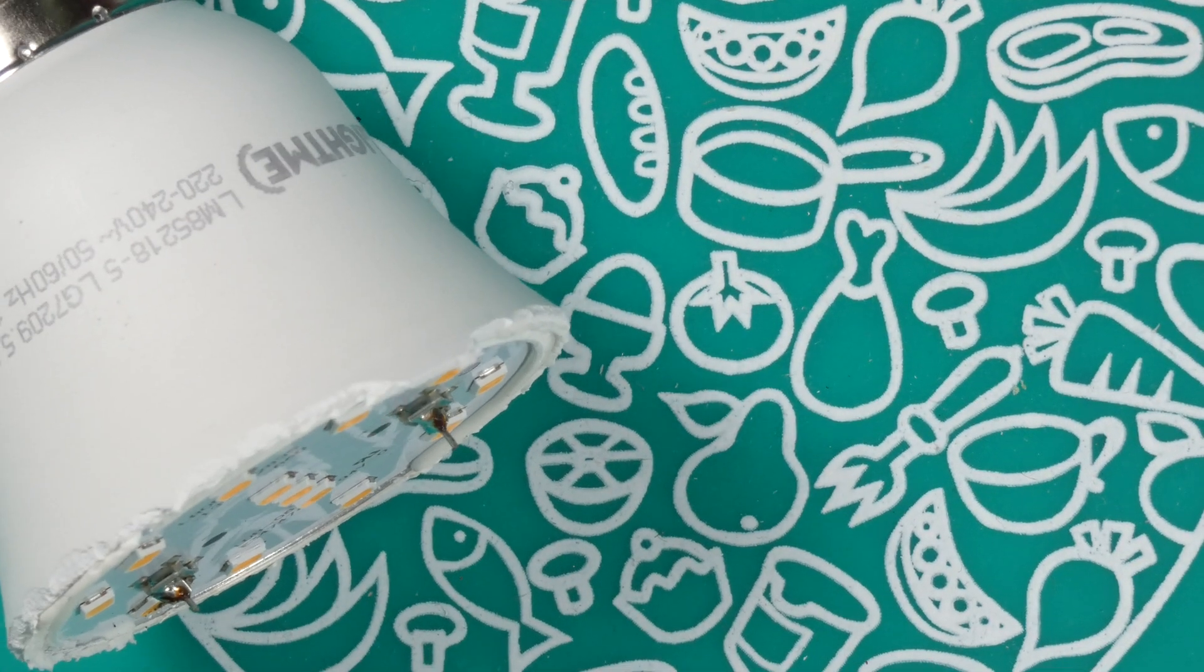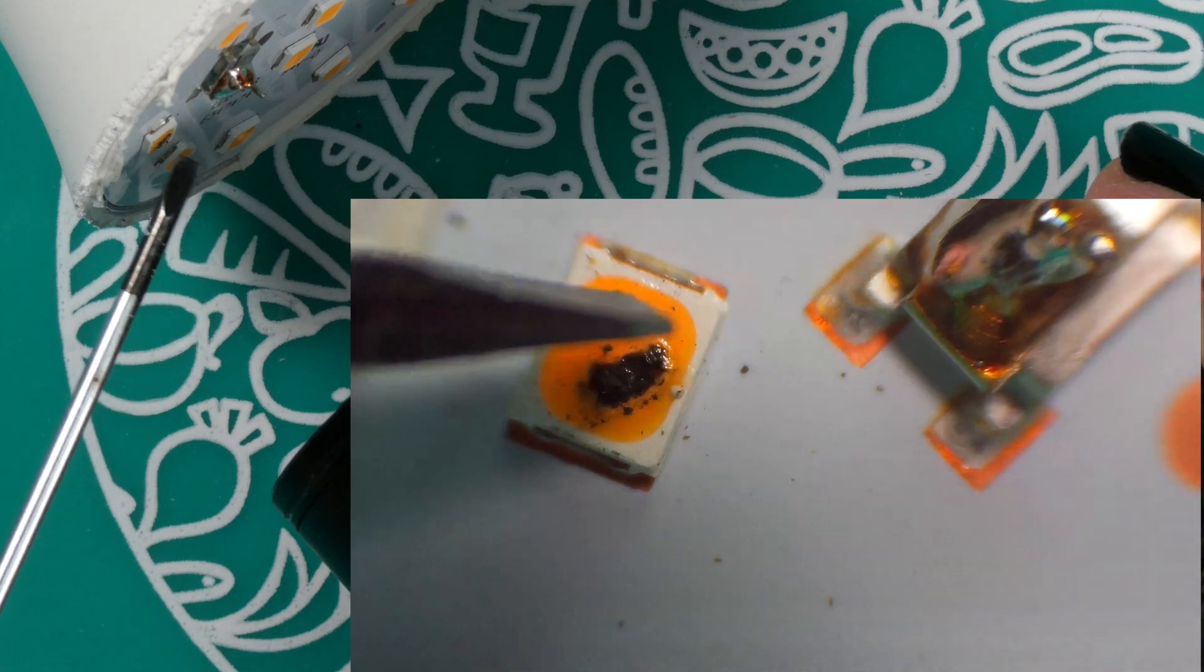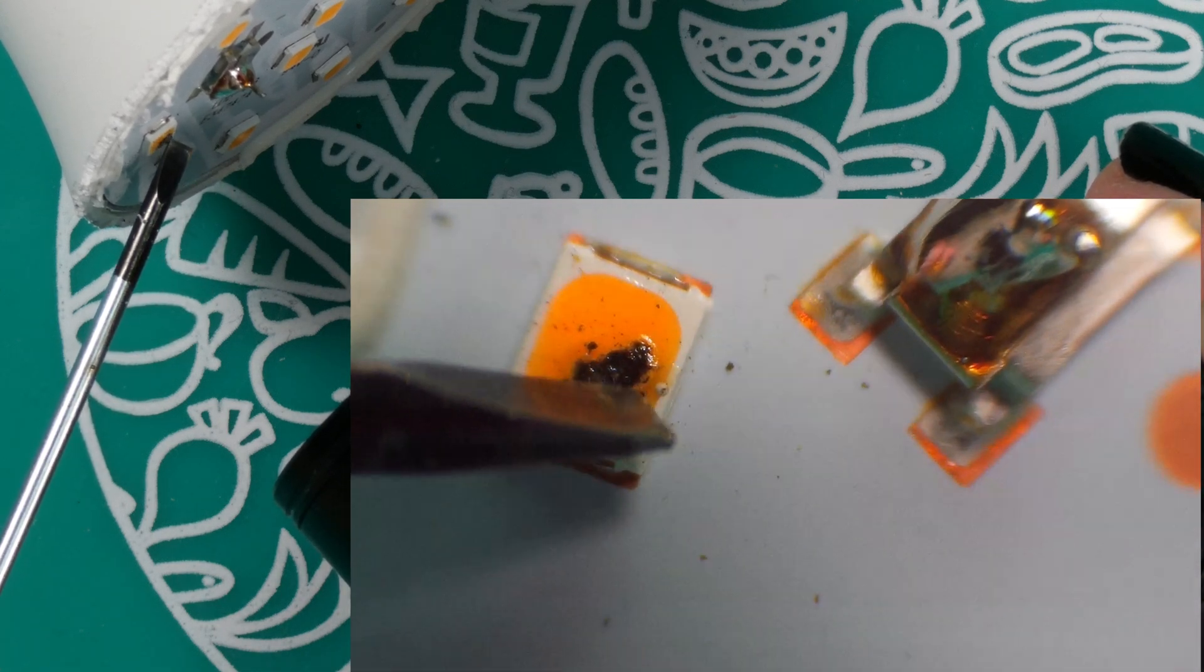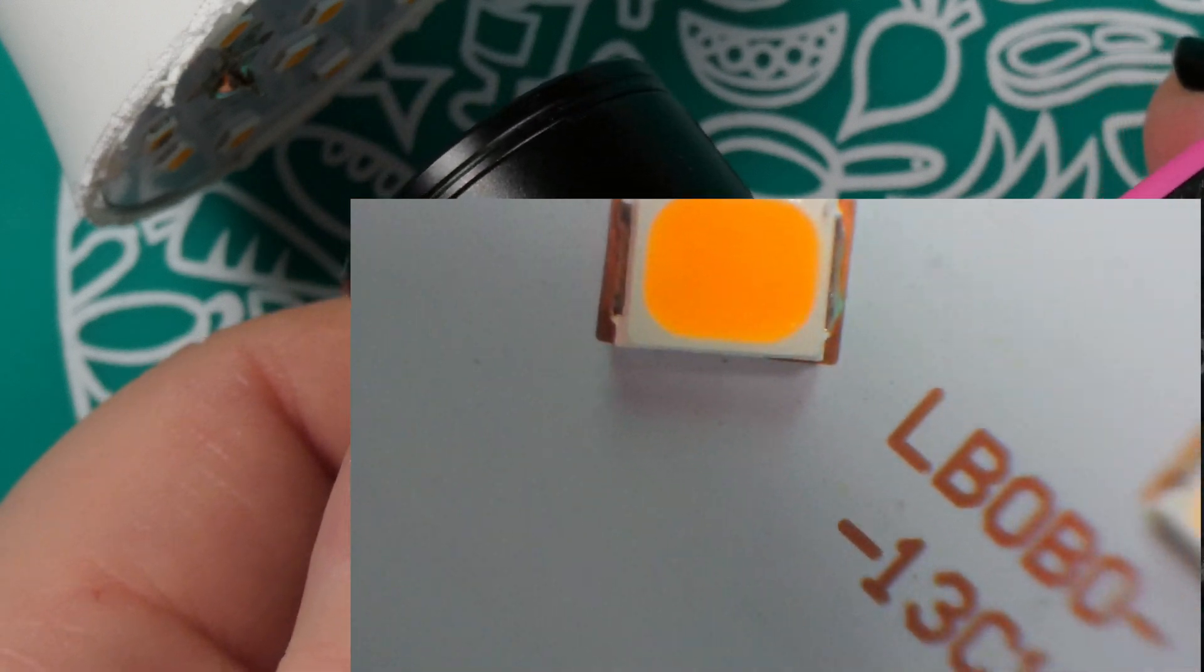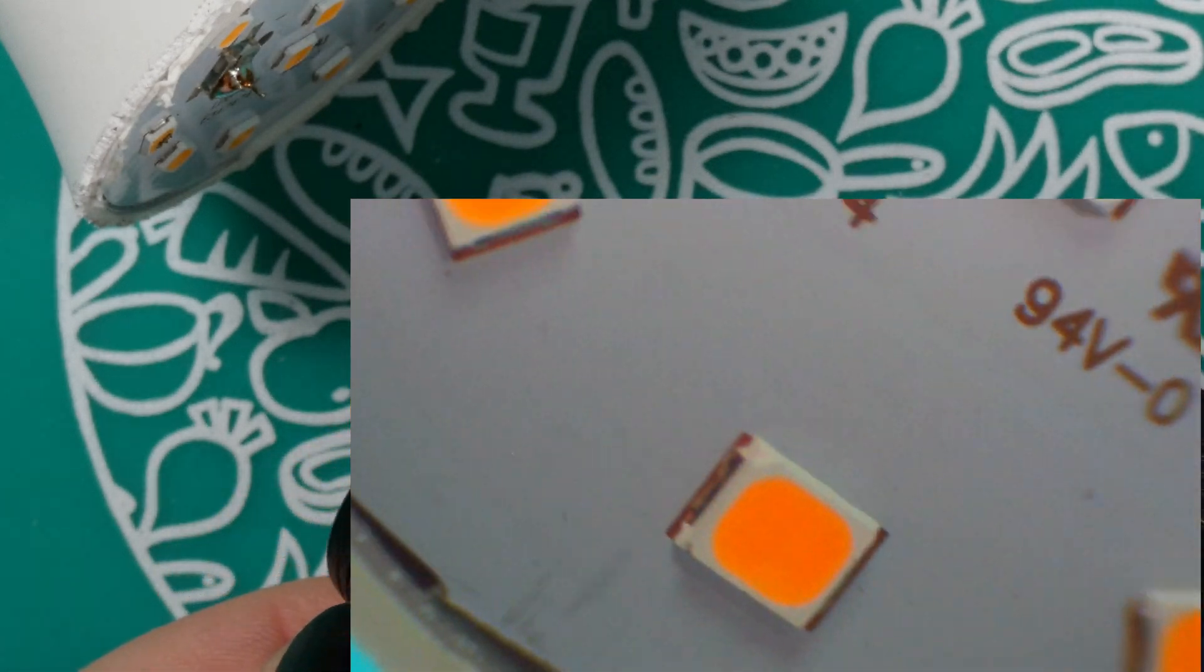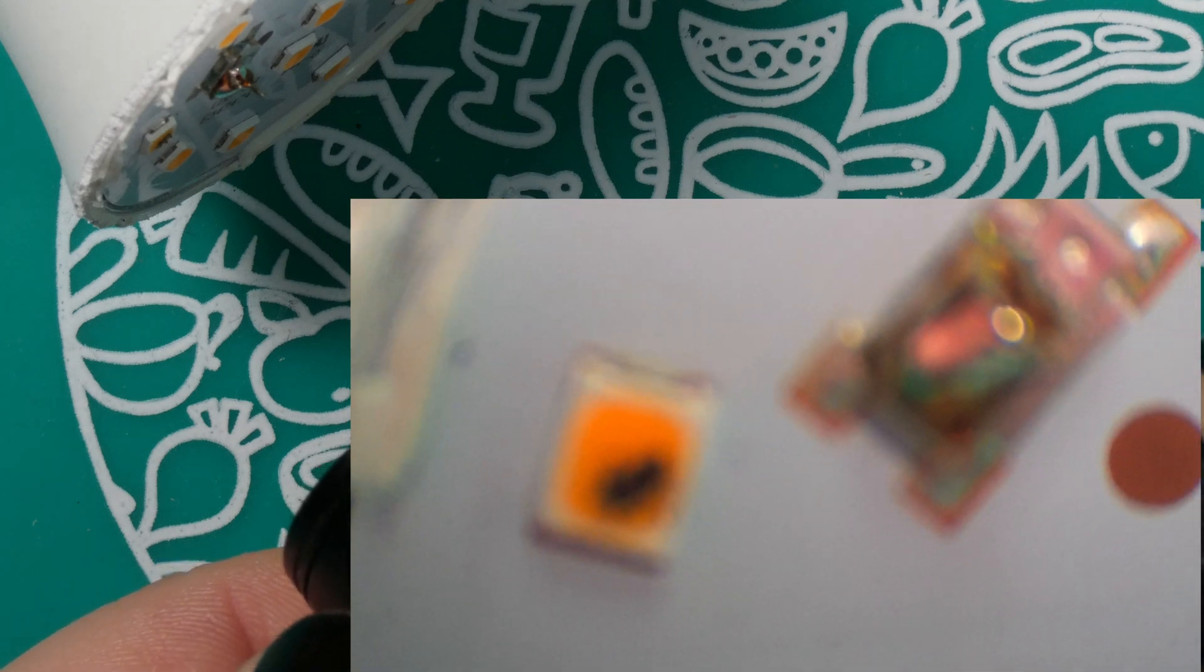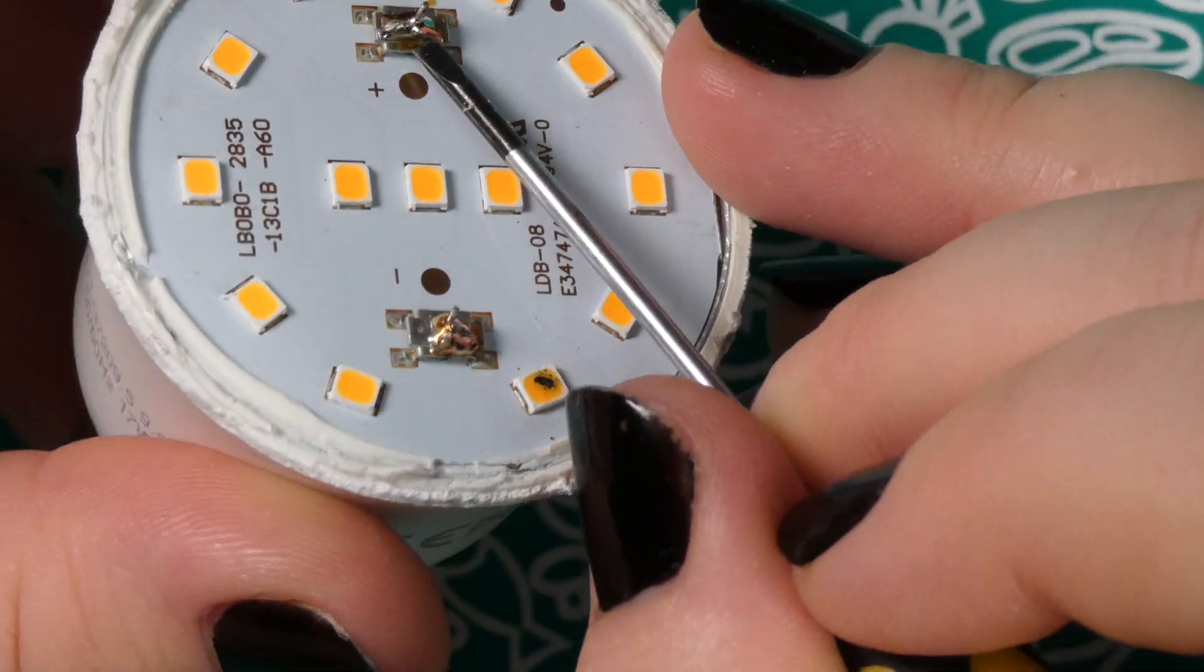Now let me use my microscope so we can take a better look at this. This black spot, so as you can see it's definitely damaged. The rest of the LEDs, well that's what it looks like if it's undamaged. The other ones they all look fine.